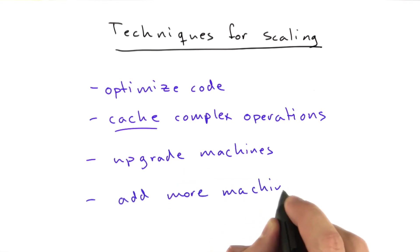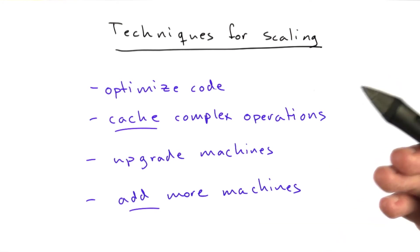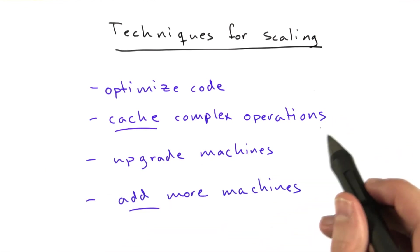And finally, another approach is to add more machines, which we will also be spending a fair amount of time on in this lecture. The optimizing code and upgrading machines are fairly straightforward. Do it when you can.